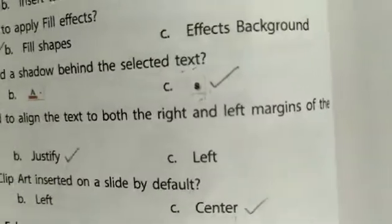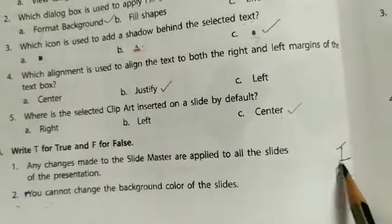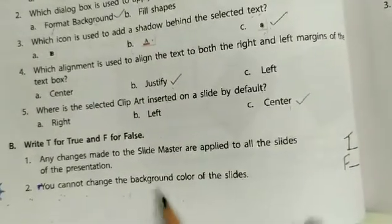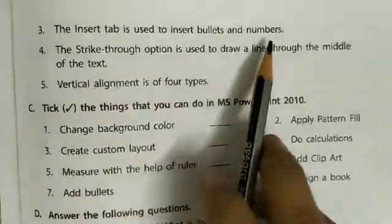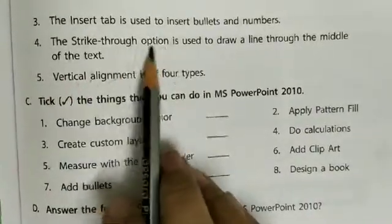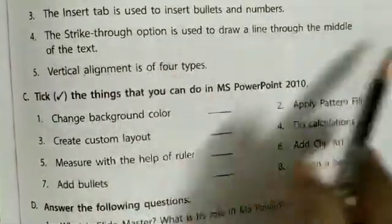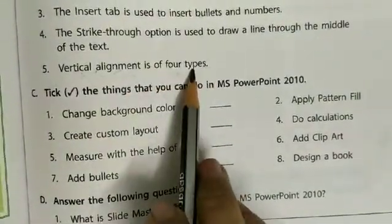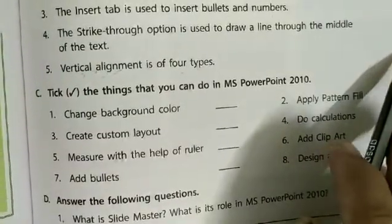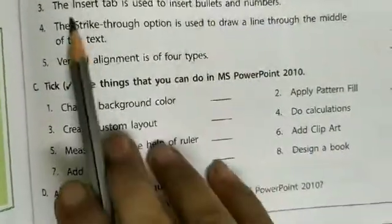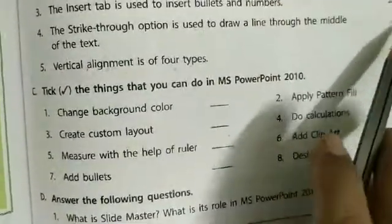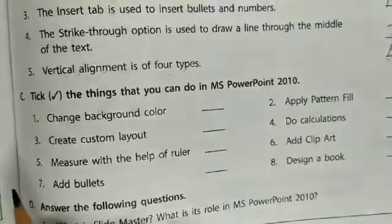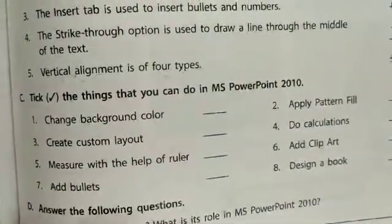Let me repeat the answers. First: any changes made to slide master are applied to all the slides — True. Second: you cannot change the background color of the slide — False. Third: the Insert tab is used to insert bullets and numbers — False. Fourth: the strikethrough option is used to draw a line through the middle of the text — True. Fifth: vertical alignment is of four types — False. Write the whole statement with a blue pen and the answers with a black pen. Do this in your fair copy. Thank you.